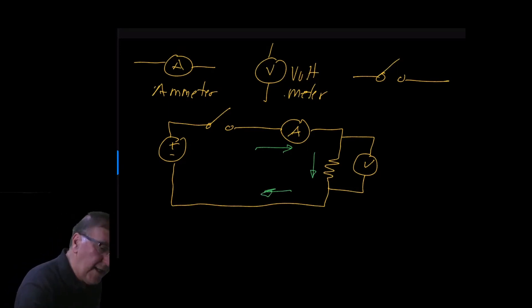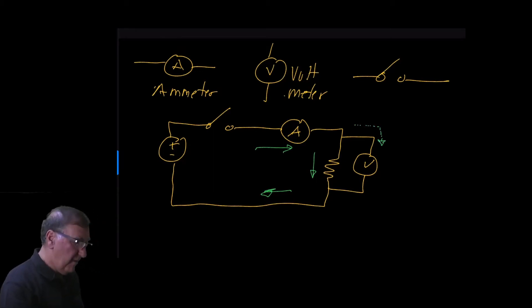Only a tiny amount flows through the voltmeter. Very, very small, in the micro or nano amps region.